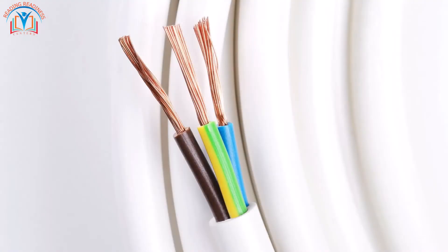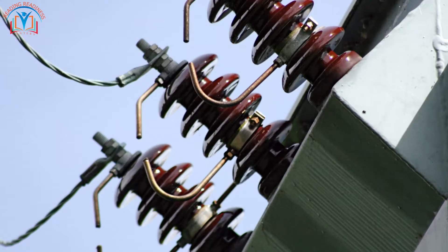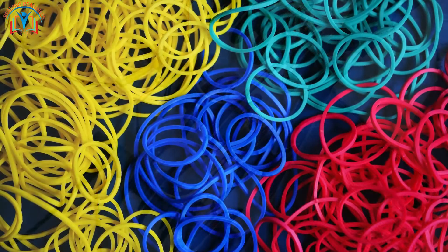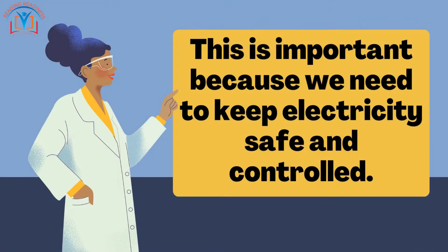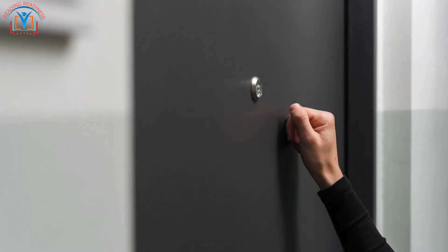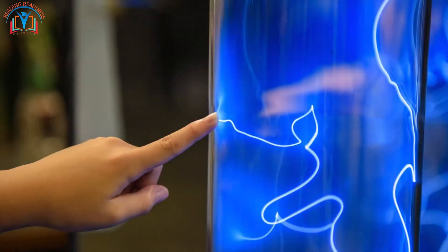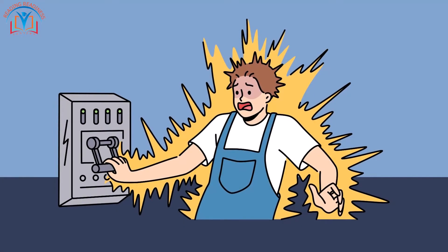Conductors, like copper wires, allow electrons to flow through them easily. Insulators, like rubber or plastic, prevent electrons from flowing through them. This is important because we need to keep electricity safe and controlled. For example, when you touch a metal door handle, you might feel a slight shock. This is because your body is a conductor and the metal handle is also a conductor. When you touch the handle, the electrons in your body flow through the handle and back into the ground, causing the shock.